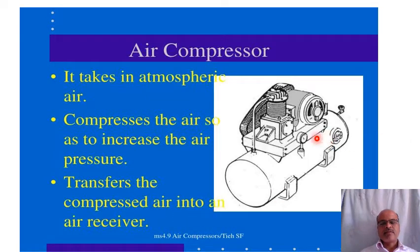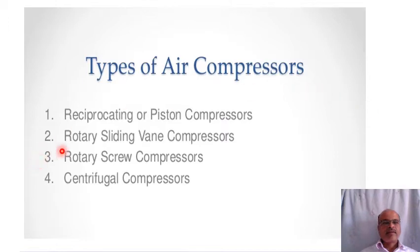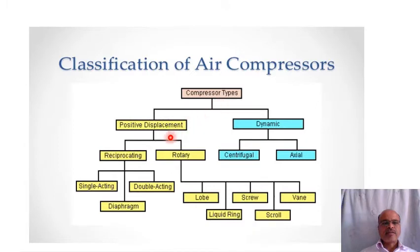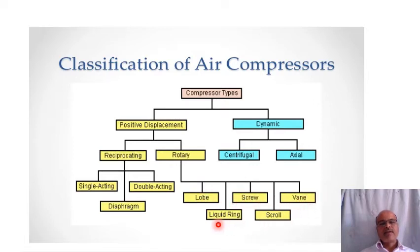This diagram shows different types of air compressors: reciprocating or piston compressors, rotary sliding vane compressors, rotary screw, and centrifugal. The compressor types are classified as positive displacement or dynamic. Positive displacement is divided into reciprocating and rotary. Rotary types include lobe, screw, vane, liquid ring, and scroll compressors. Dynamic compressors include centrifugal and axial compressors.